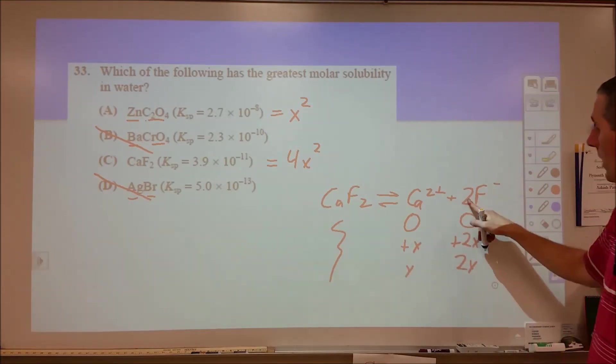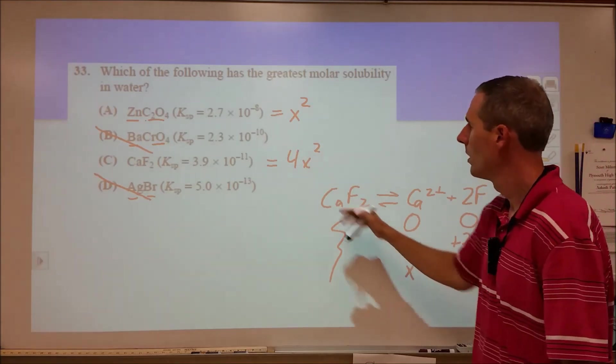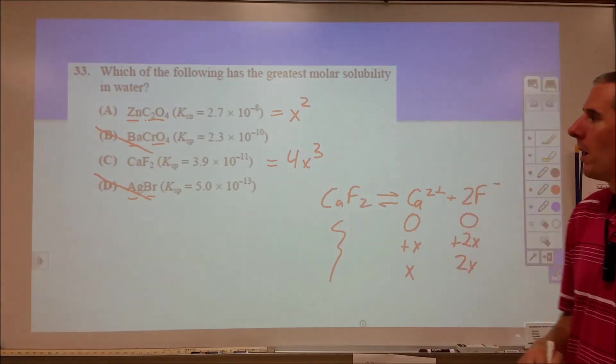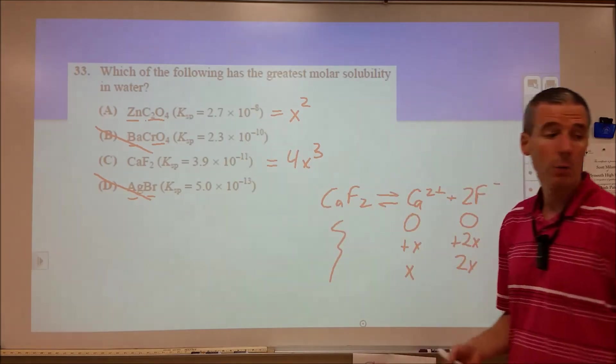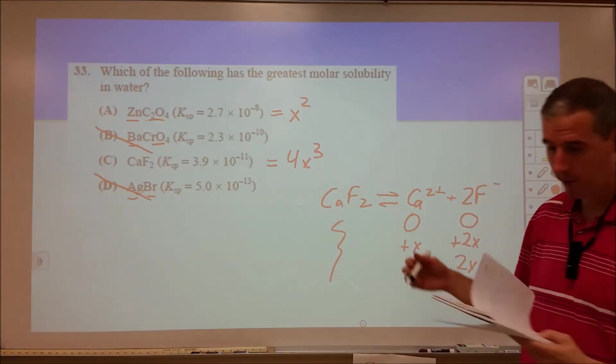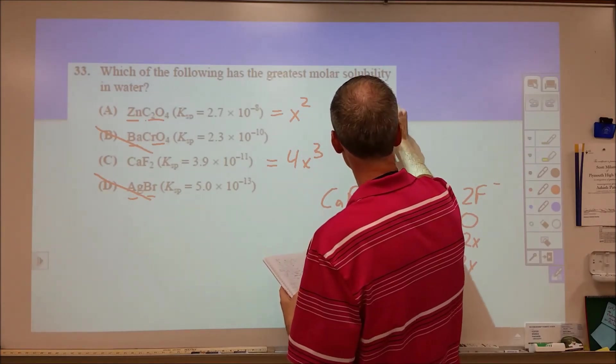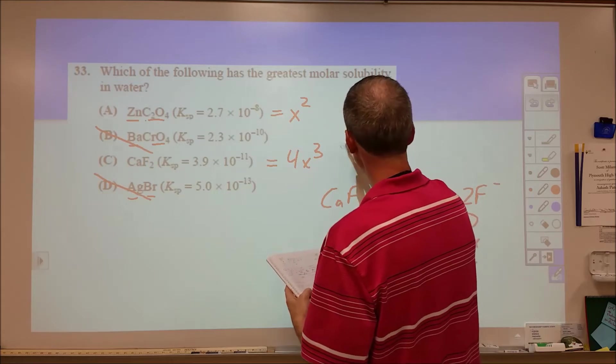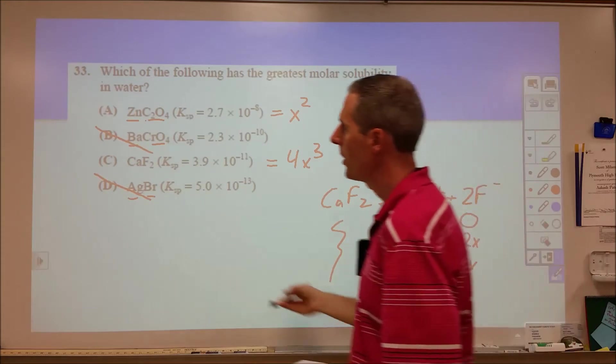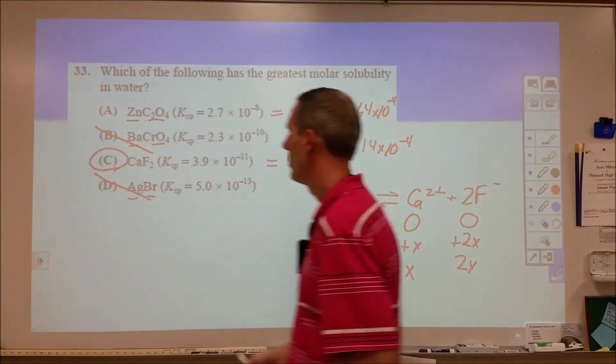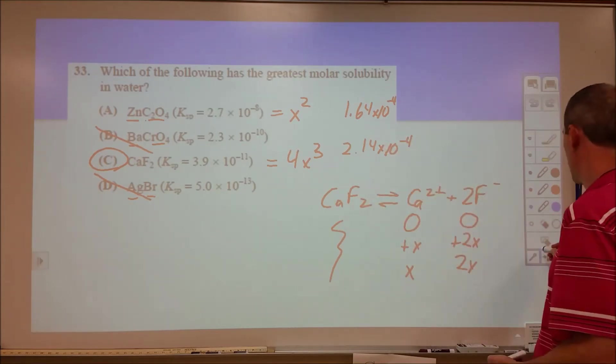We want to set 4X cubed equal to this, X squared equal to this. And we want to figure out which one gives the larger value of X. For here, we get an X value of 1.64 times 10 to the -4. And here we get 2.14 times 10 to the -4. So narrowly edging out would be the calcium chloride, the most soluble by a very small amount. B and D would both be smaller than that particular solubility.